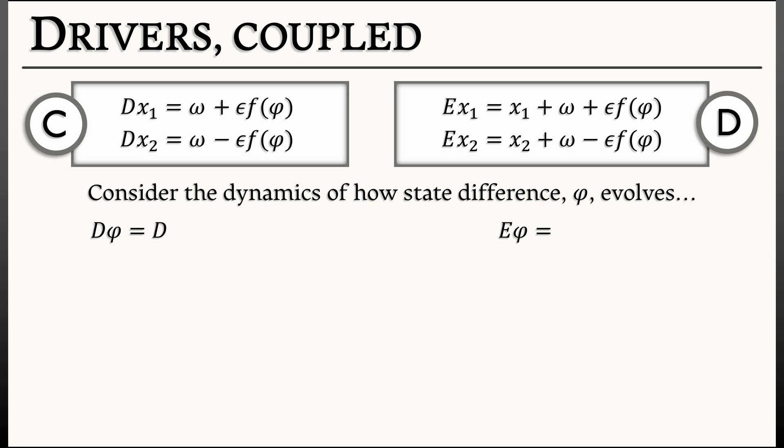So all we need to do is compute d of x2 minus x1, or e of x2 minus x1. And since these evolution operators are linear operators, these split into dx2 minus dx1 in continuous time, or e x2 minus e x1 in discrete time. And now, all we need to do is take the right-hand sides from our models.